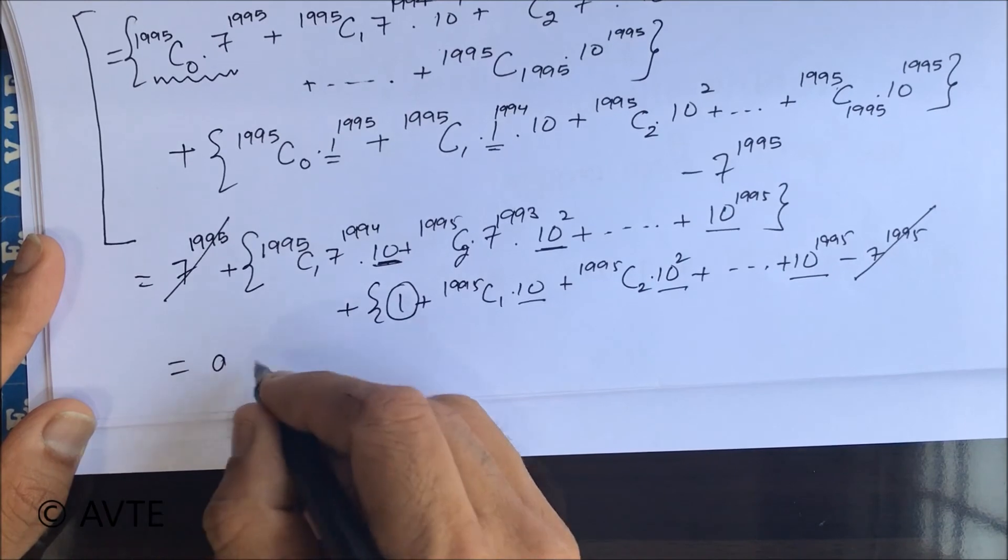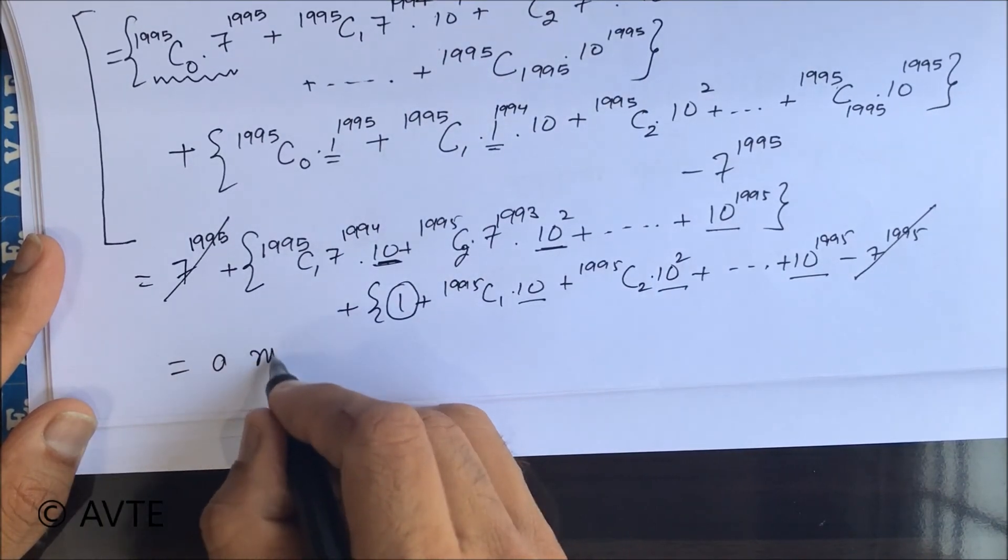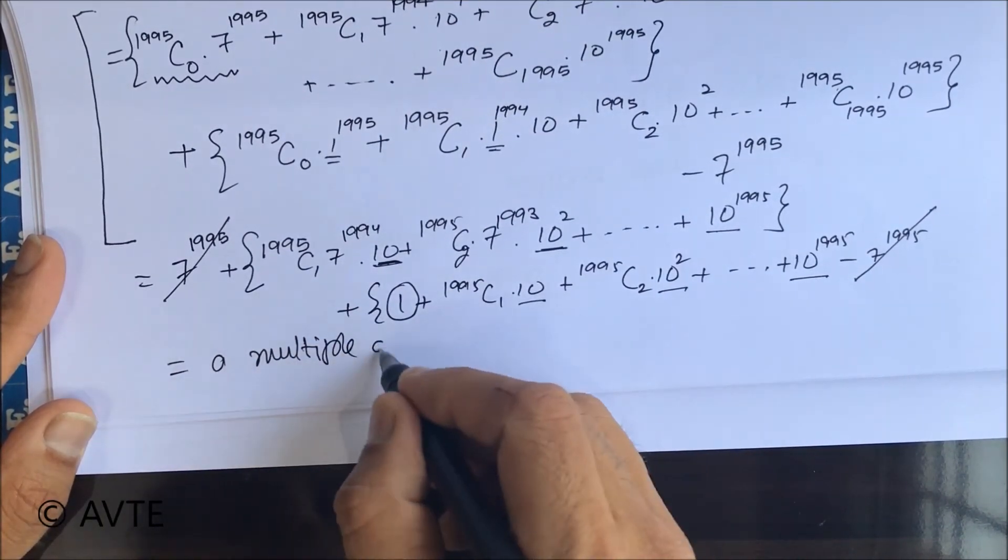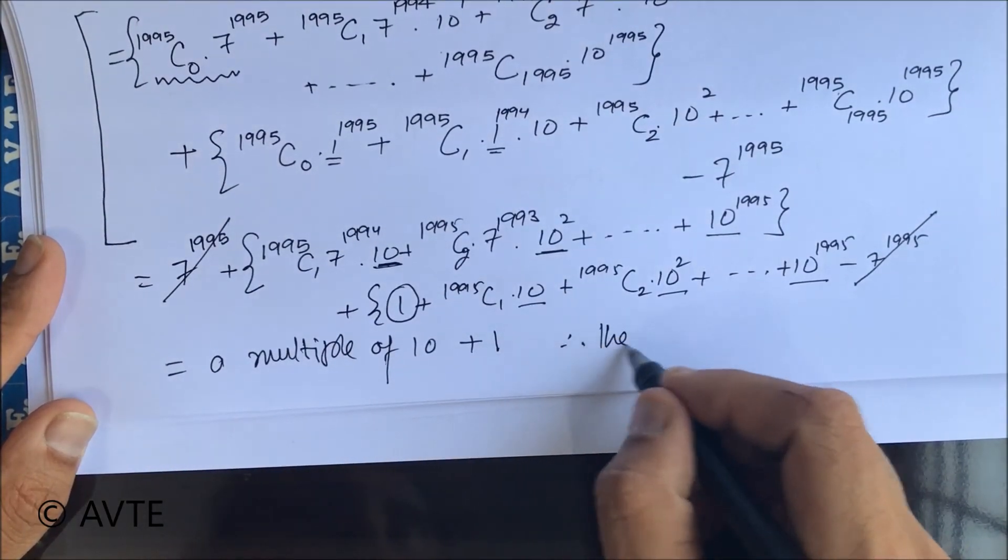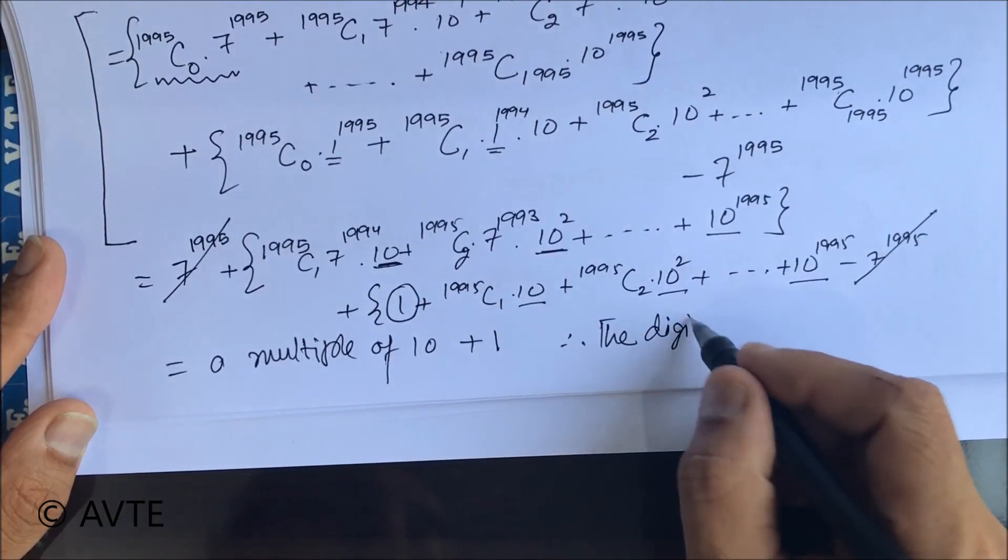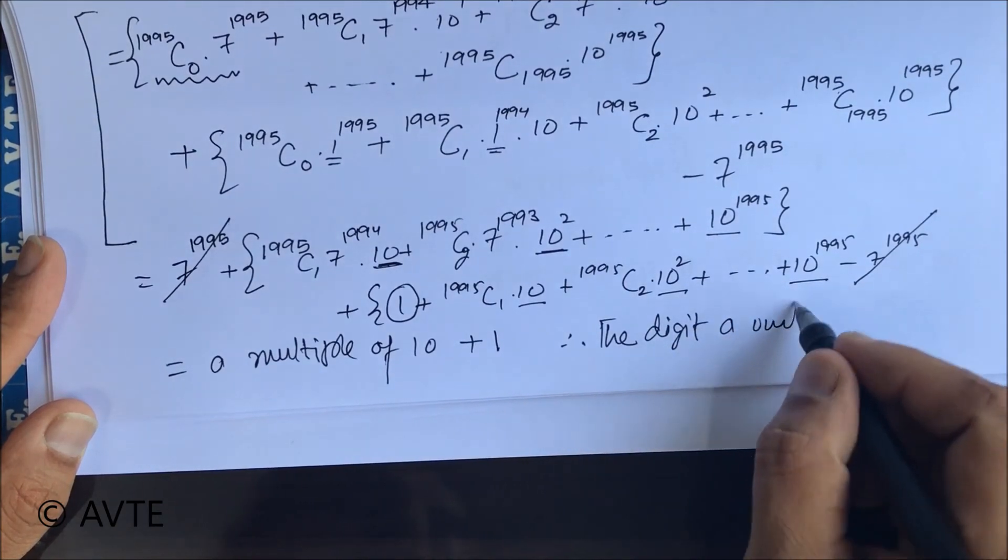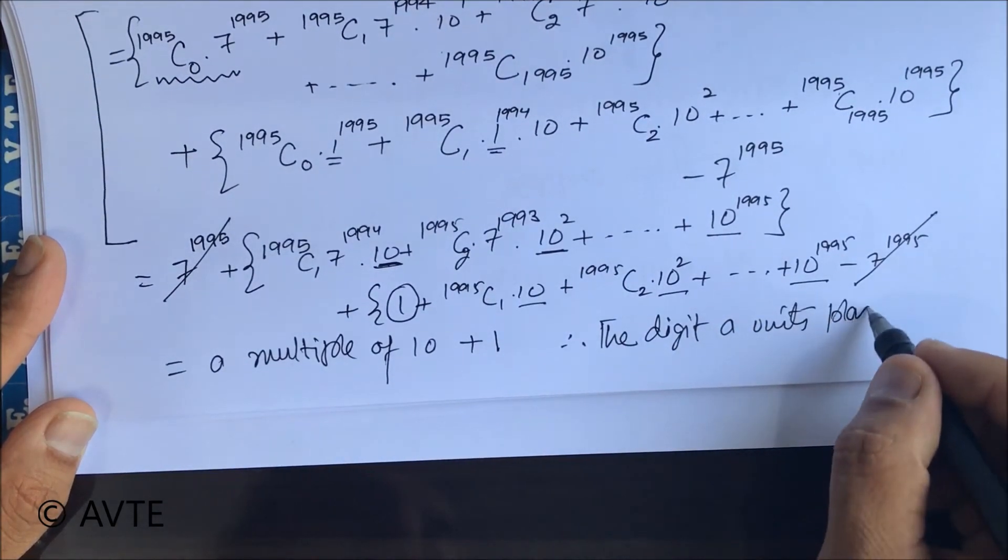So this is a multiple of 10 plus 1. Therefore the digit at units place is 1.